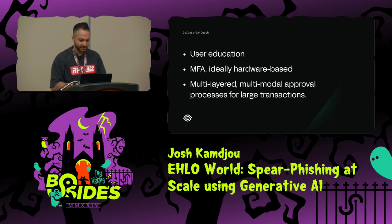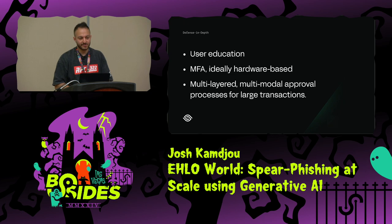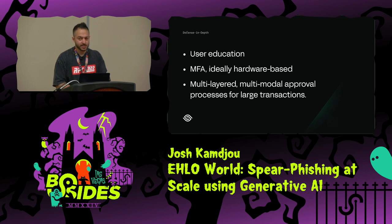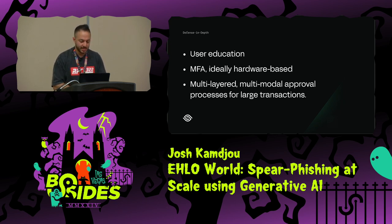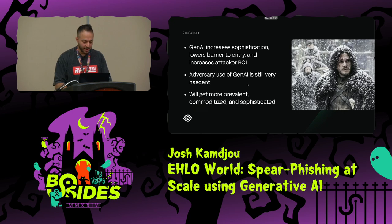The last word to wrap up: defense in depth. Obviously if you can block it at the email layer — left of boom, as far left as you can go — great. But you should always have a defense in depth mentality. Educate your users — it's important to know that phishing attacks can be extremely convincing. It's not just the fake Microsoft Teams alert or things like that. For credential phishing attacks, employ MFA, ideally hardware-based like YubiKeys. And to prevent BEC, have a multimodal approval process for large transactions. It's still very nascent. It's getting worse.